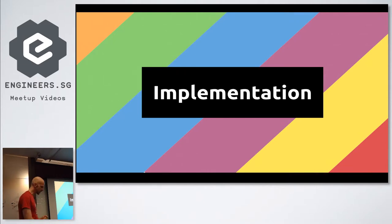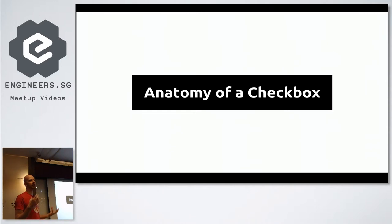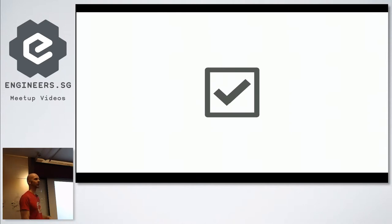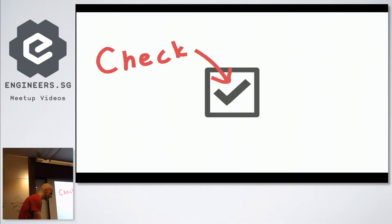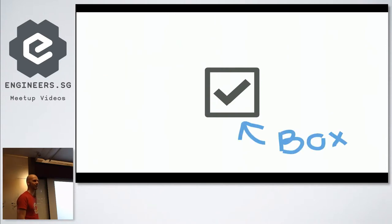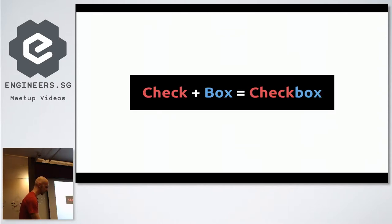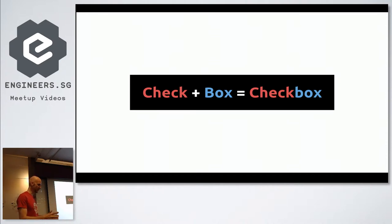So the implementation for this — I started, as I often do, by taking out a piece of paper and a pen and drawing a checkbox. This is not the checkbox I drew but it looked sort of like this. I was like, what are the parts of our checkbox? I spent a considerable amount of my life — about 20 minutes — thinking about the anatomy of a checkbox. It turns out it's fairly self-explanatory: there's the check thing and there's the box thing. And that is the anatomy of a checkbox.